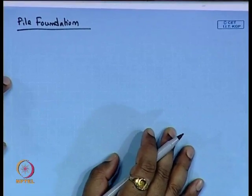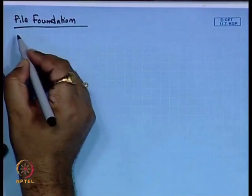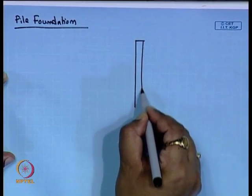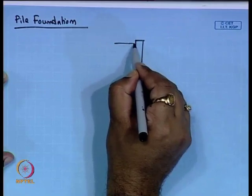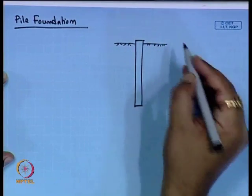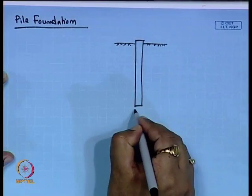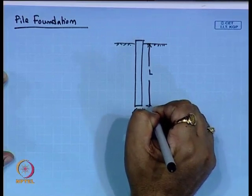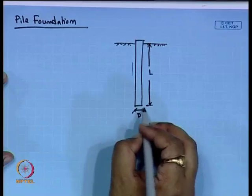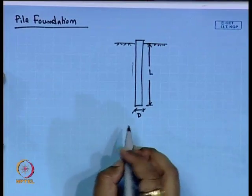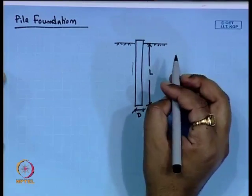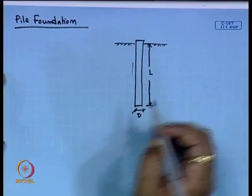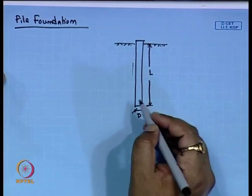For deep foundation, first we explain pile foundation. A typical pile: this is the ground surface where we can provide the pile cap. If it is a circular pile, this is the diameter of the pile and this is the length of the pile. The length of the pile is very high compared to the width or diameter. Here we consider load carrying capacity for different types of loading, and there are two criteria: load carrying capacity and settlement criteria.